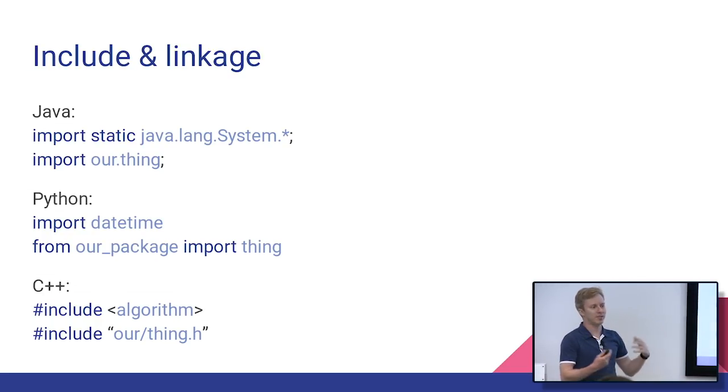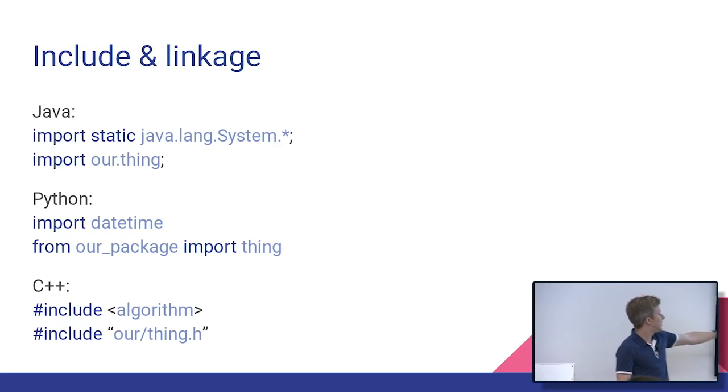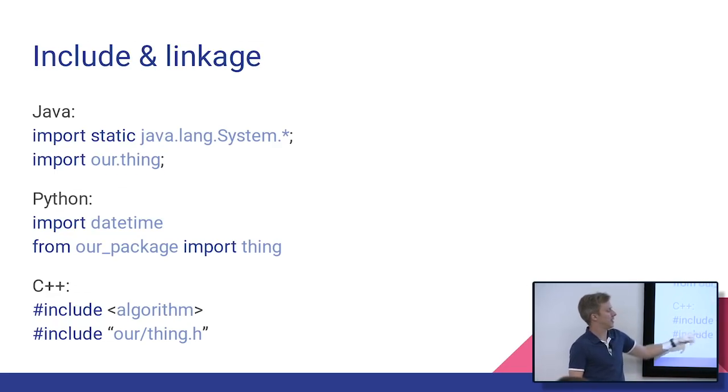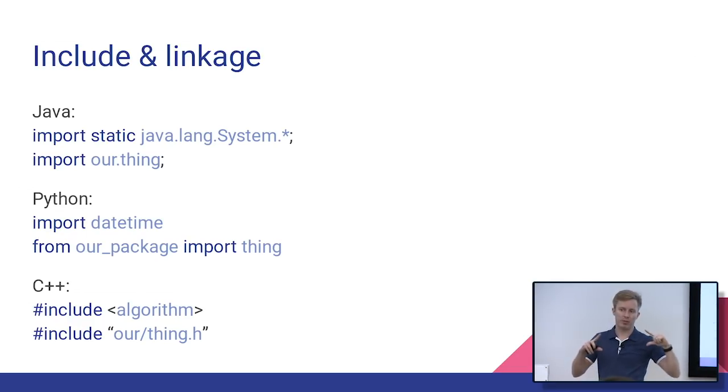And the bottom one is here is some of our code. And in C++, you typically do those a little differently. If it's like a library, you're probably going to be using those angles. And if it's your own thing, you'll probably be using quotes.